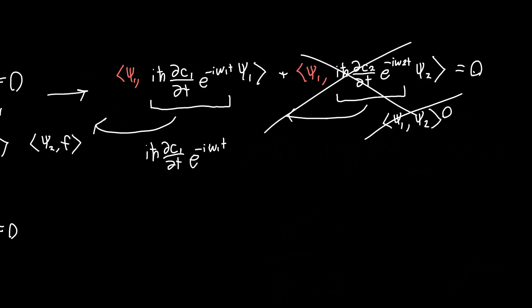So this whole term on the right-hand side goes away, and we've got our final differential equation in terms of c1. But if we divide everything by iℏ and multiply by e^(iω2t), we'll see something really interesting, which is that the derivative of c1 with respect to time is 0. And you'll get the same exact thing if you take the inner product with respect to psi2, that dc2/dt is equal to 0.